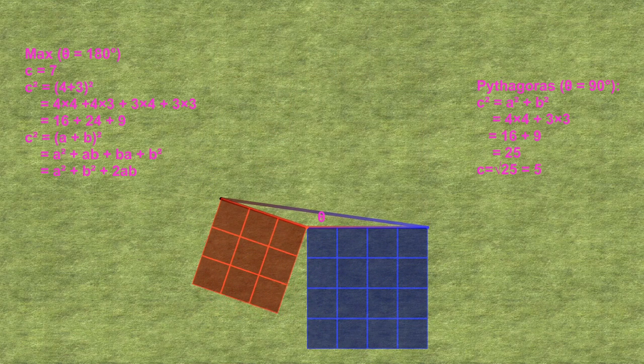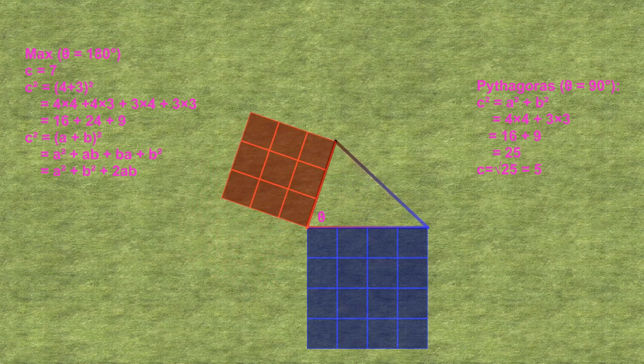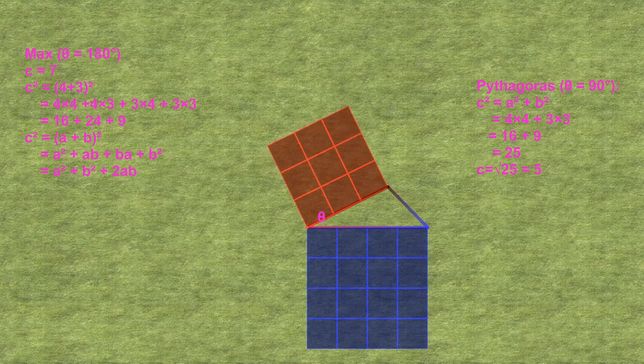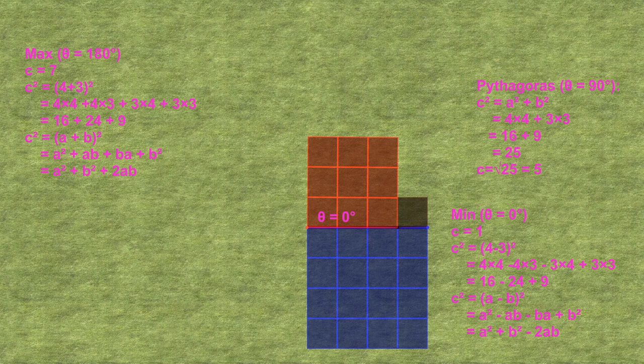Remember that, and let's look at our second special case, where the angle decreases all the way to 0 degrees. This is the shortest we can make the previous hypotenuse. It's clear from the model that the length of the side is now 4 minus 3, or 1, and that the area is 4 minus 3 squared, which is just one little square unit.